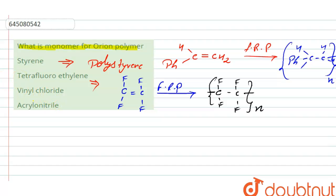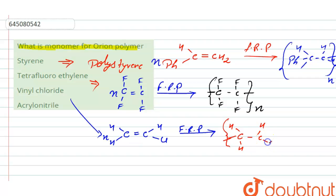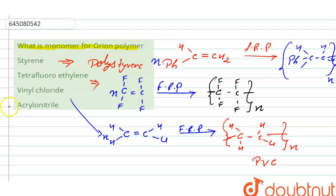In option C, we have vinyl chloride. Its structure is CH₂=CHCl. By free radical polymerization, we get the repeating unit –[CH₂–CHCl]ₙ–. This polymer is called PVC, or polyvinyl chloride.